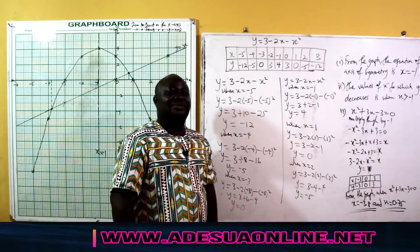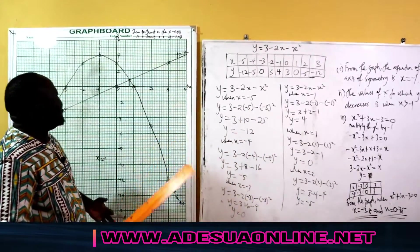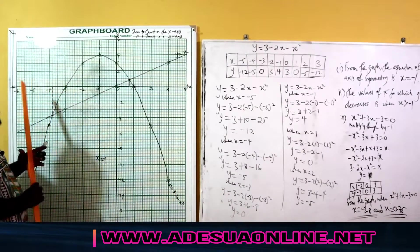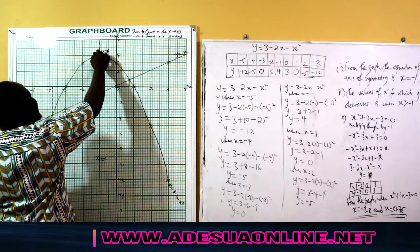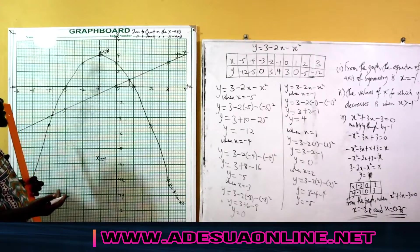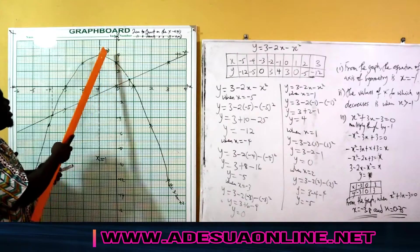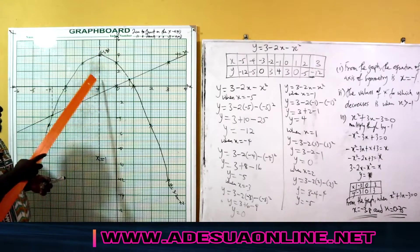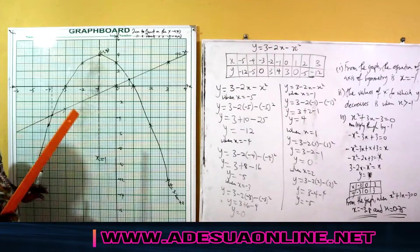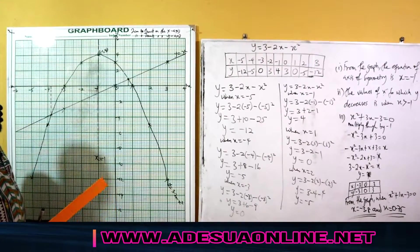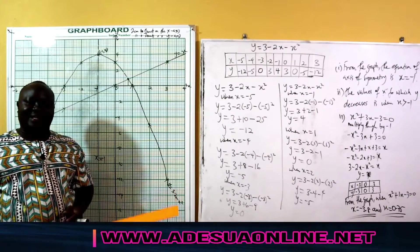We've come to the end of the graph. To summarize: the turning point is at coordinates negative 1, 4. The maximum value is y equals 4, occurring when x equals negative 1. The axis of symmetry is x equals negative 1. We'll leave you with more questions to solve. Until we meet again, bye.